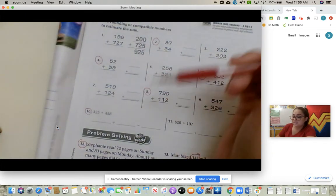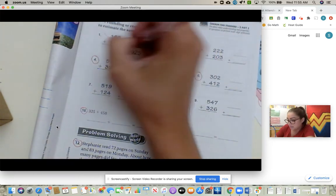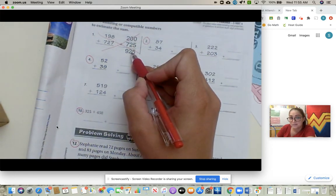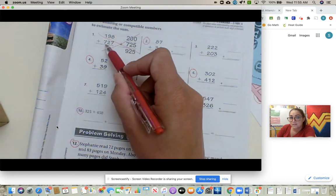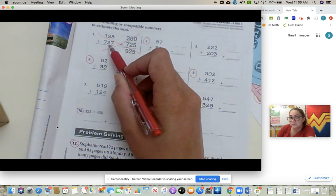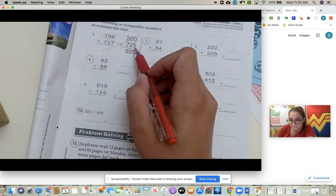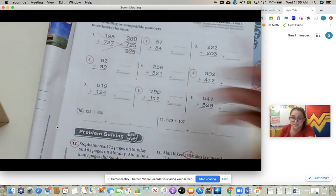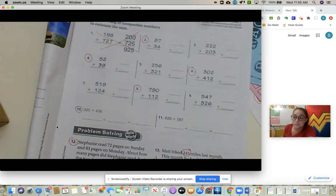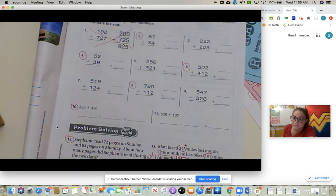Number one is confusing because it's talking about compatible numbers. So you might think, 727, why'd they put 725? Don't worry about it. Don't use that as an example. I want you just to round. Round your numbers and add your sums.